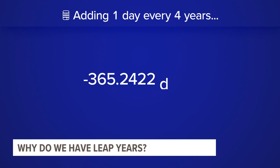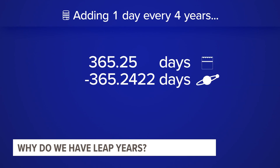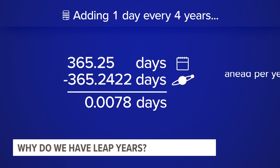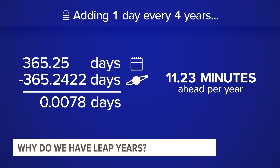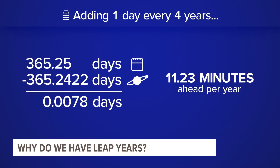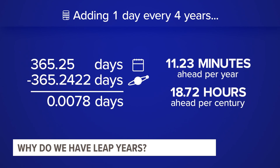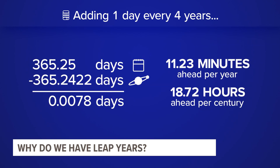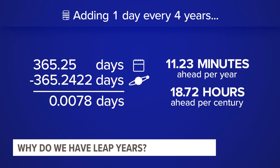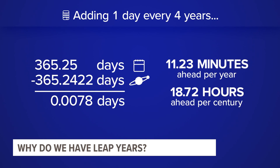Problem solved, right? Not quite. When you subtract the amount of time it takes for the Earth to complete one revolution around the Sun with our solution, you find out we're still about 11 minutes off each year. And over 100 years, our calendar would be about 18 hours off, which doesn't sound like a huge problem — but over centuries, this would eventually throw off our calendar.